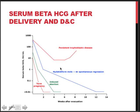This graph shows serum beta-HCG levels on the vertical axis and weeks after evacuation on the horizontal axis. The red line shows a term pregnancy — after delivery of the placenta, two weeks later the beta-HCG level is less than 2. After an induced abortion it takes about four weeks. It is important to know that after miscarriage it can take a few weeks until beta-HCG returns to undetectable levels.